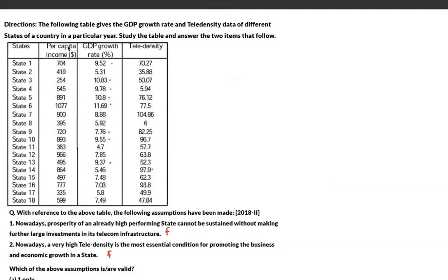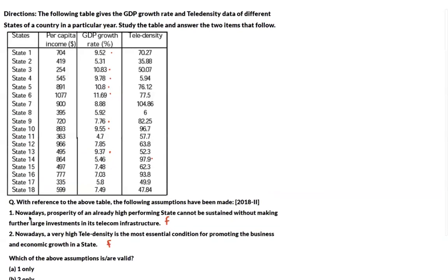The next dataset includes per capita income, GDP growth rate, and tele-density. Statement 1 says prosperity of an already high-performing state cannot be sustained without large investments in telecom infrastructure. Correlating growth rate and tele-density, we can't confirm this is true for every state — for example, one state has a growth rate of 5.46 but tele-density at 97.9 with other states still ahead — so statement 1 is false.